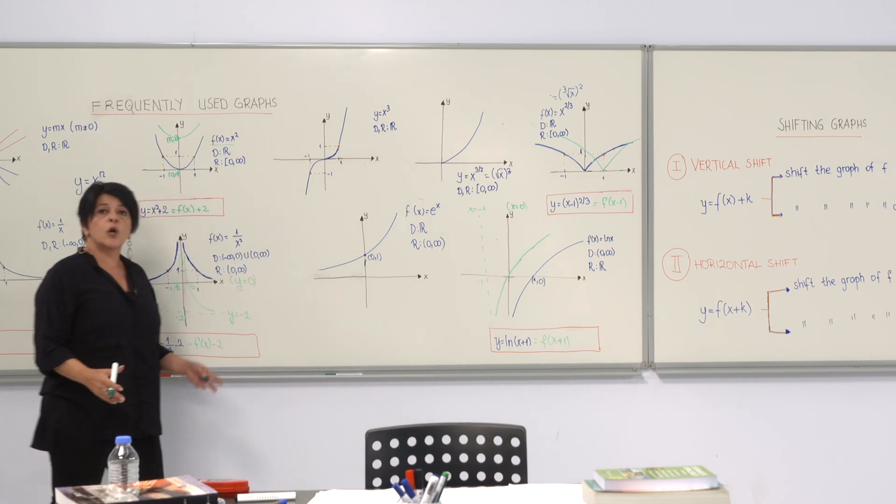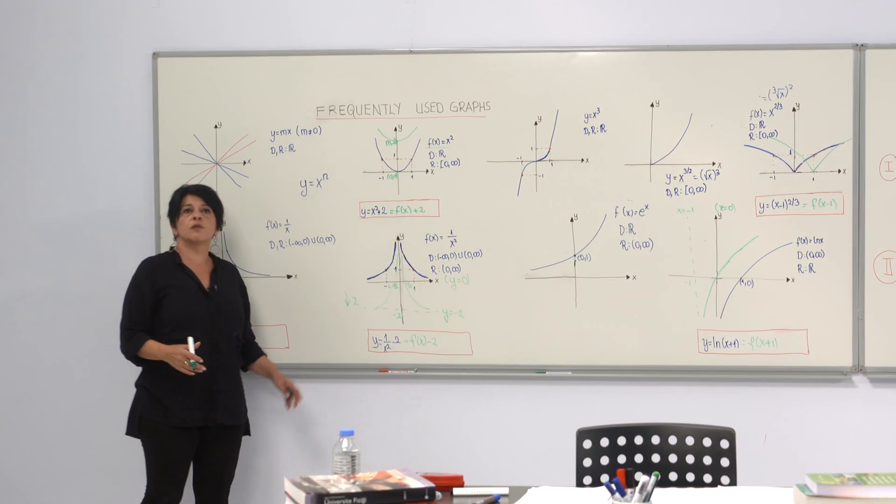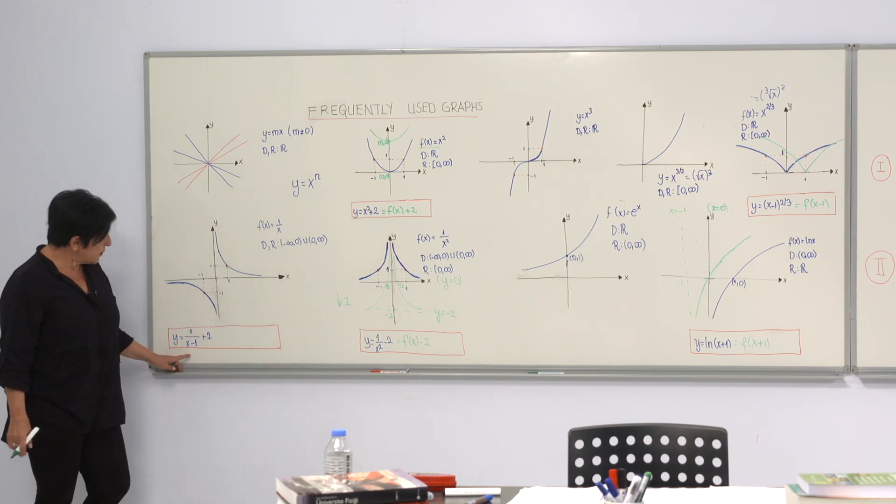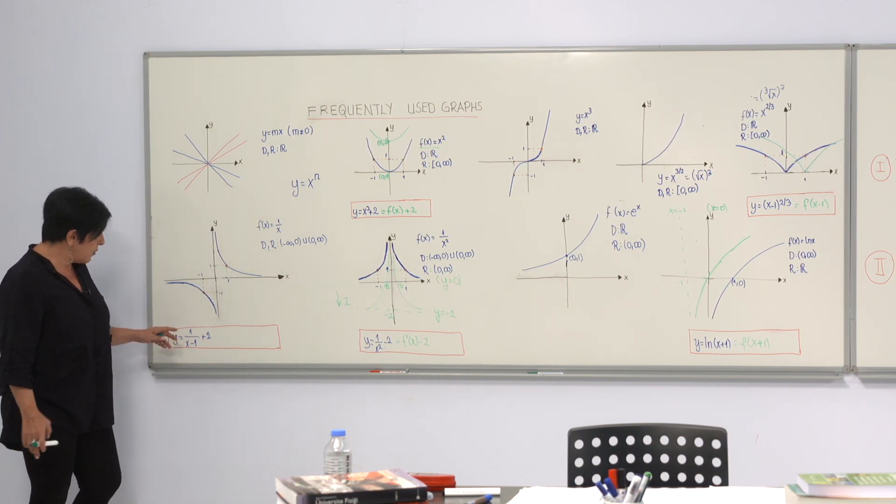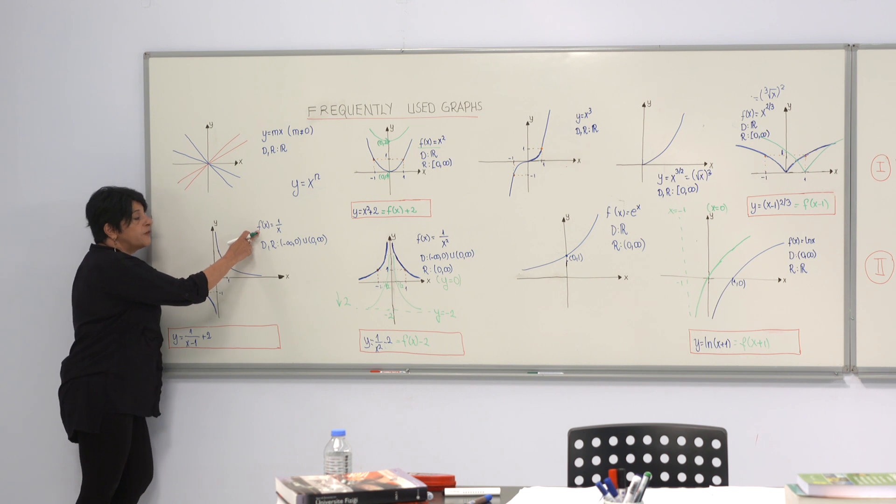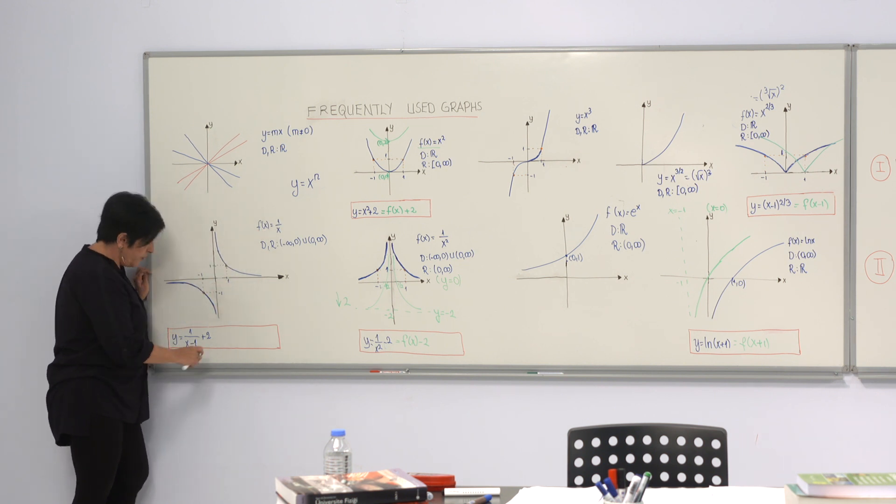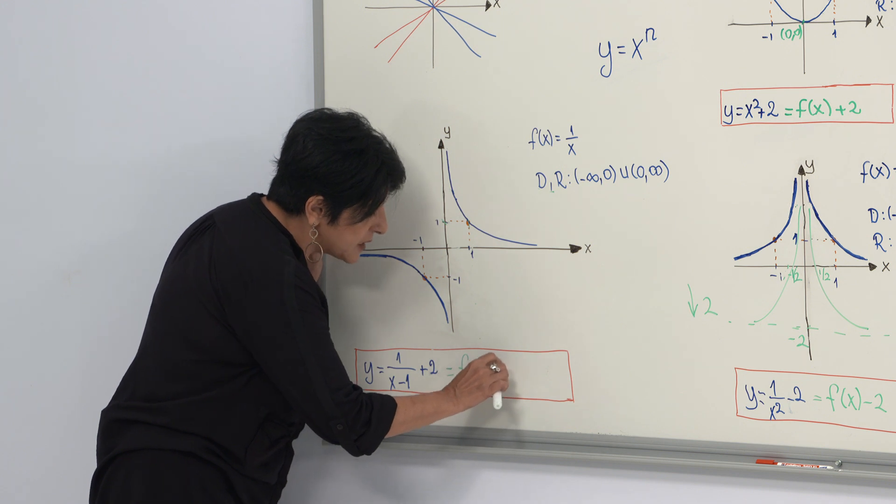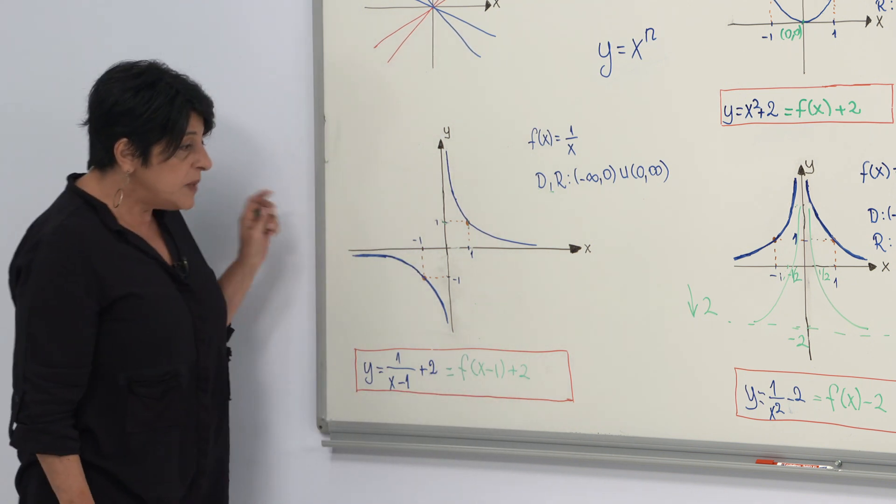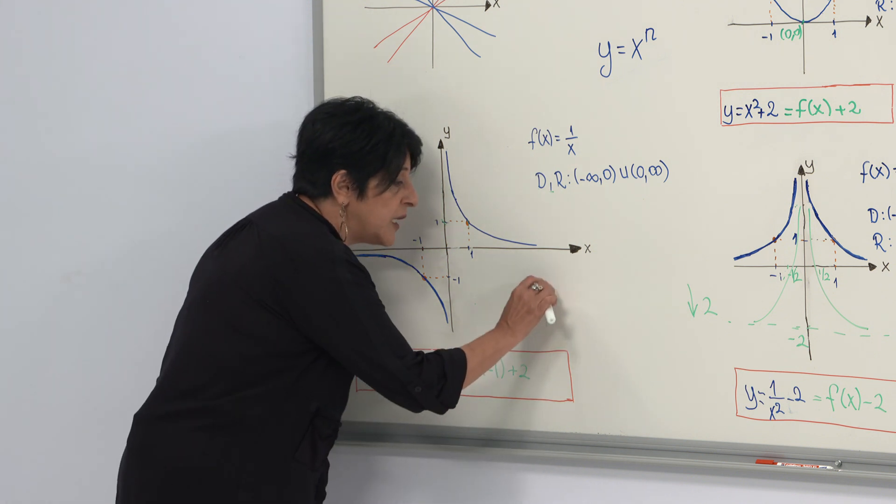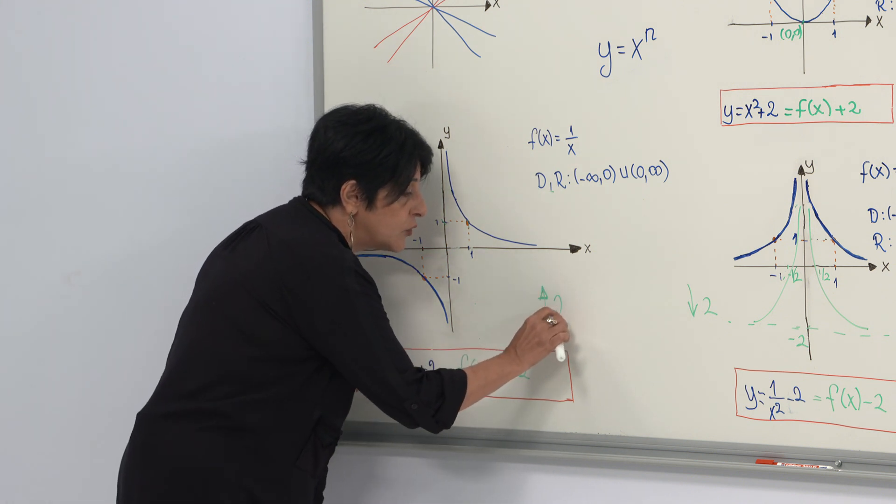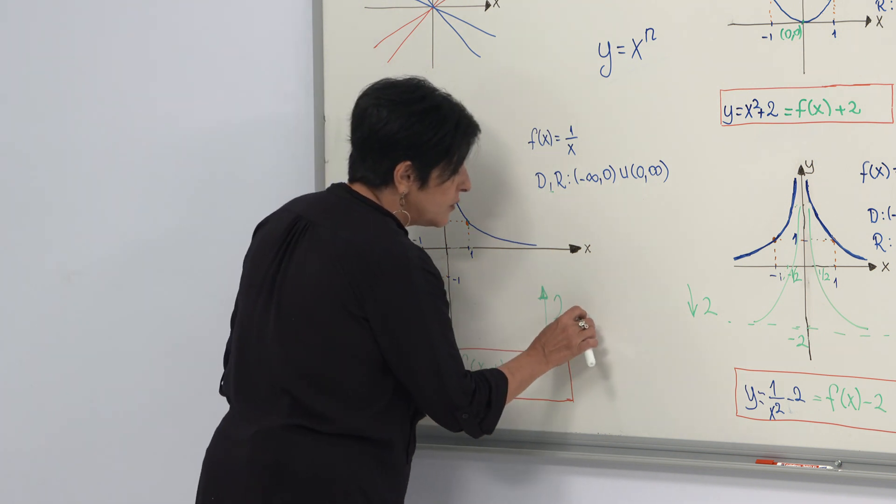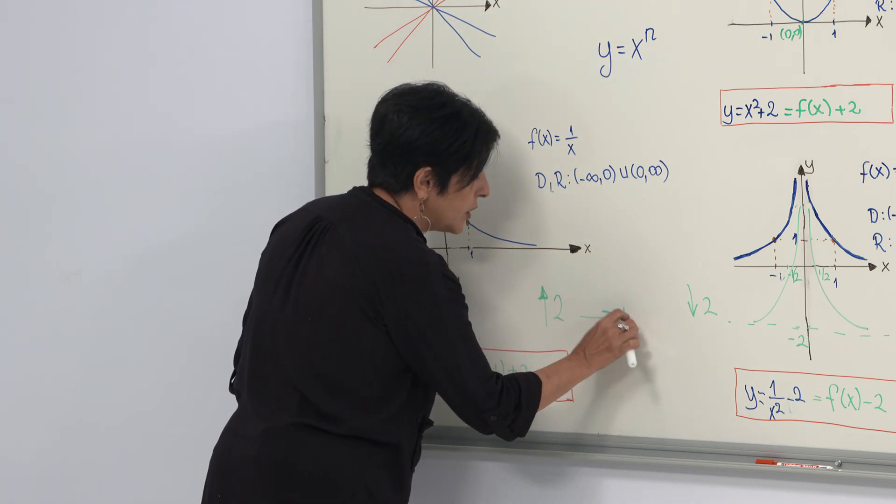Now, we can also work with a combination of these vertical and horizontal shifts. Now, I write this example here. You see it has both. Actually, if you call f(x) to be 1 over x, you see that you can write this one as f(x minus 1) plus 2, which means I need to shift it up by two units and right by one unit.